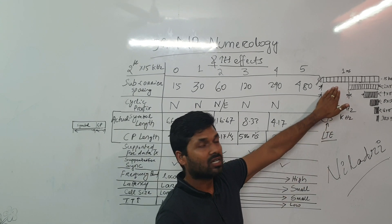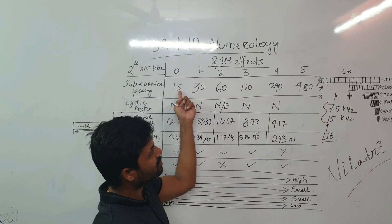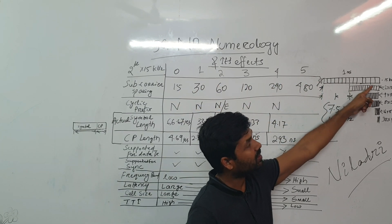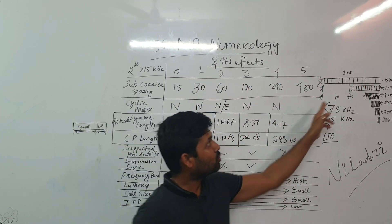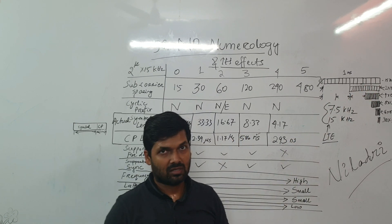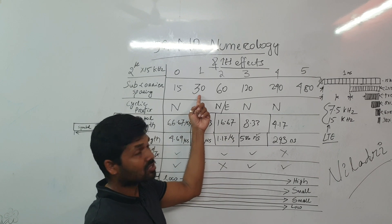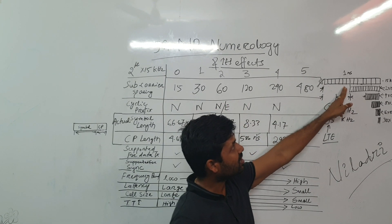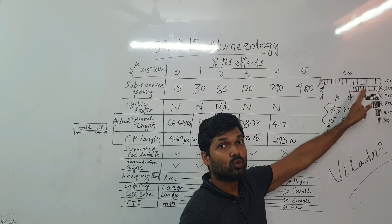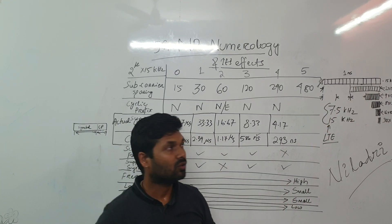So just for your understanding, this one is 15 kilohertz, the first one, wherein we transmit 0 to 13. That means 14 symbols. But if it is subcarrier spacing is 30 kilohertz, then we transmit 14 plus 14, 28 symbols. In this 0.5 millisecond, 2 into 15.